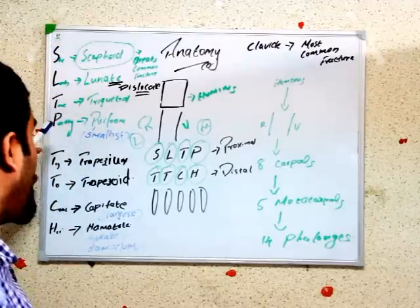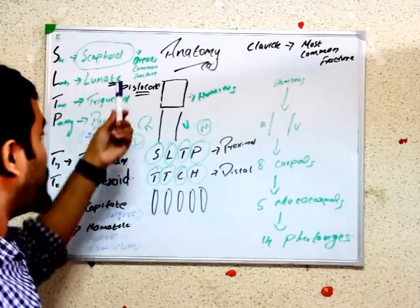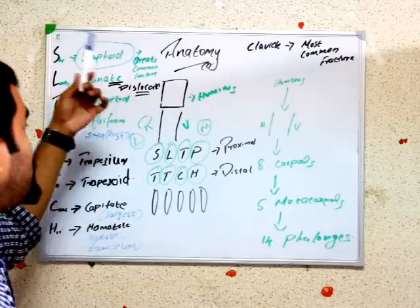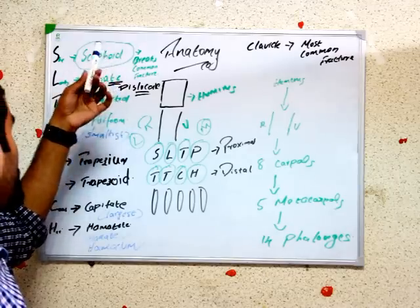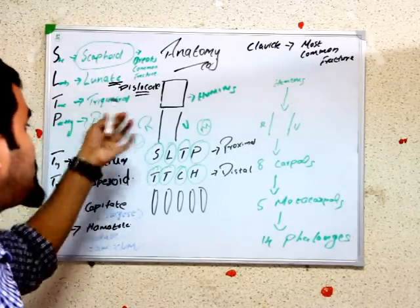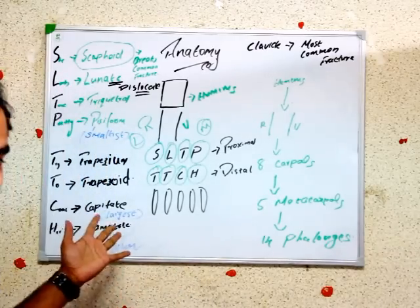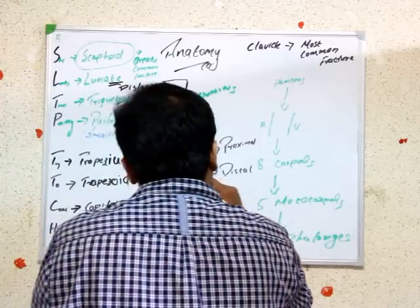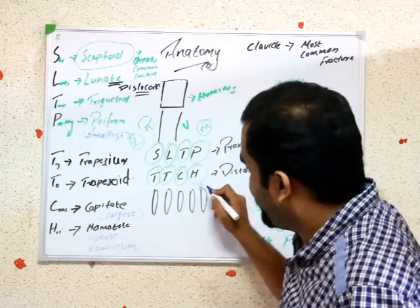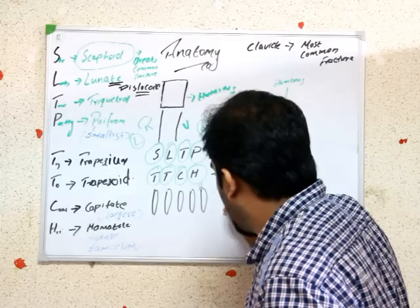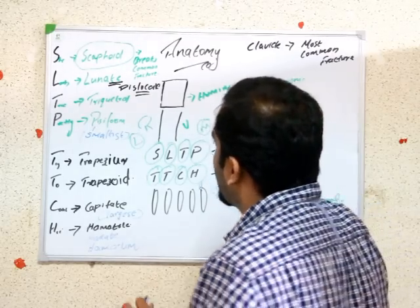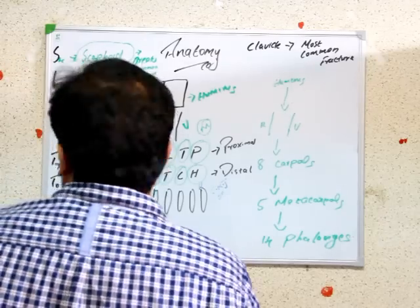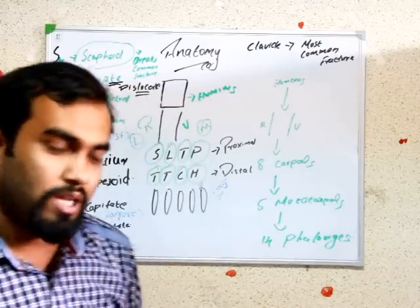To summarize carpal bone facts: 'She Looks True Pretty, Try To Catch Her.' Scaphoid is most commonly fractured among carpals. Lunate is most commonly dislocated. Pisiform is the smallest bone. Capitate is the largest — remember capital city means largest. These are the carpal bones, and the joint is called the CMC — carpal metacarpal joint.